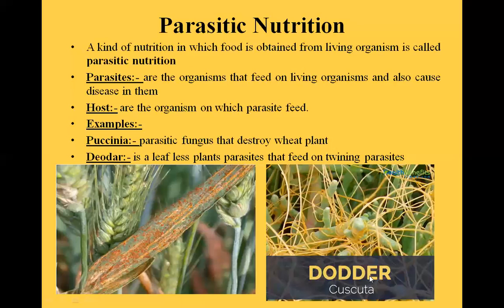We call it Cuscuta in Urdu. It is a yellow color plant with leaf-like structures. The plant grows and obtains food from the host. This is a Cuscuta reflexa plant — it grows extensively over the host. This is a good example of parasitic nutrition.